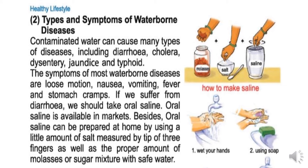Types and symptoms of waterborne diseases: contaminated water can cause many types of diseases including diarrhea, cholera, dysentery, jaundice, and typhoid. In Bengali: 'dooshito paani bivhinan haarne rog srishti korte paare, jamon diarrhea, cholera, amasar, jaundice ebong typhoid.' The symptoms of most waterborne diseases are loose motion, nausea, vomiting, fever, and stomach cramps.